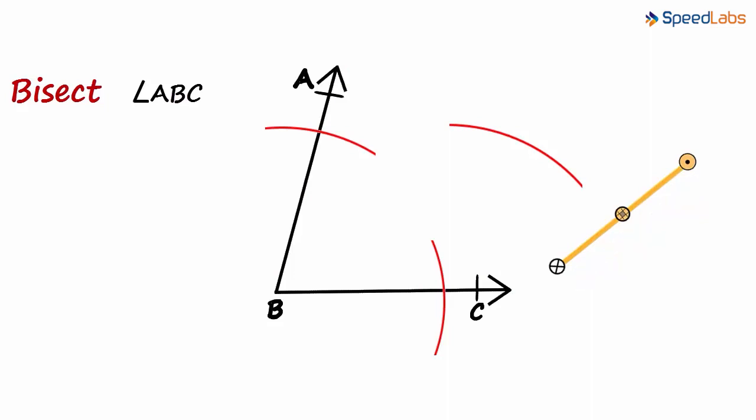And for the other arc, we keep the compass on the intersection at the other leg. We keep the compass here. And with the width unchanged, we draw an arc to intersect the previous arc.